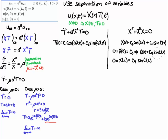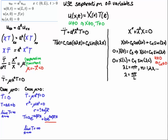Now I focus on the X equation and apply the boundary conditions. From the left boundary condition X(0) = 0: cosine of zero is one, so that forces c3 = 0, leaving X = c4 sine(λx). Plugging in L for the other boundary condition gives c4 sine(λL) = 0. Since I assume lambda > 0 and c4 ≠ 0, I need λL = nπ, giving λ = nπ/L. These are the eigenvalues for the eigenfunction expansion.